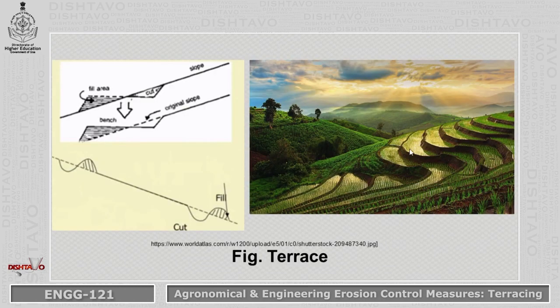As shown in this diagram, these are the terraces. We are reducing the length of slope by cutting this land and making the terraces.